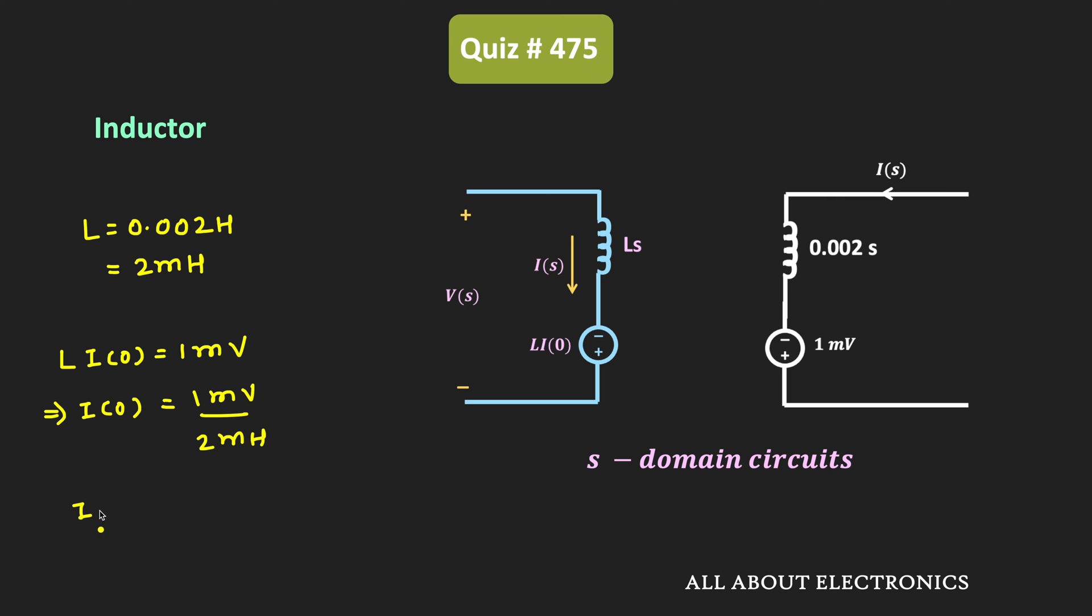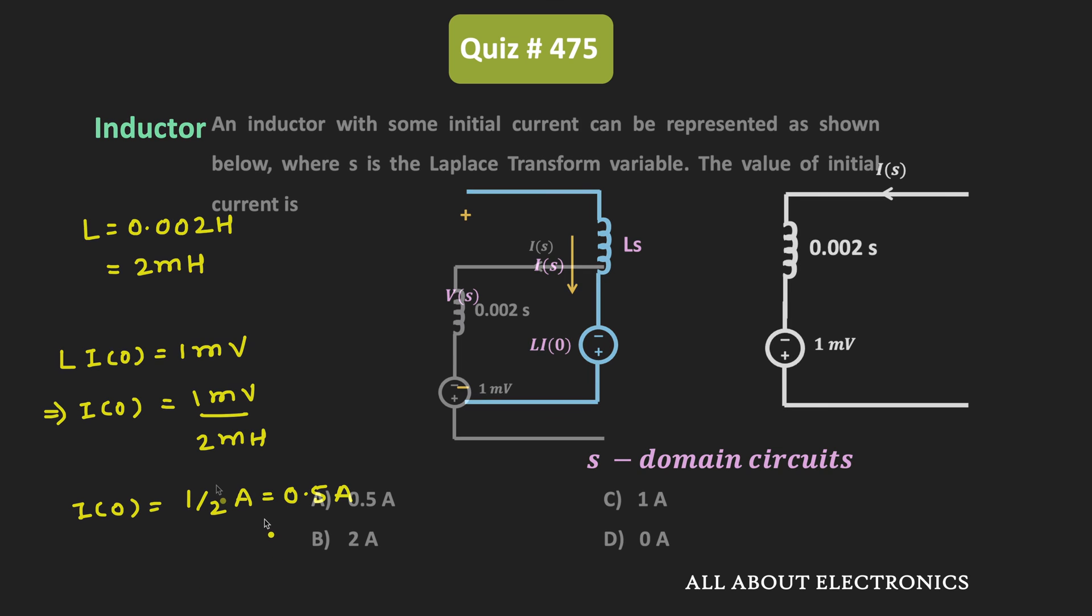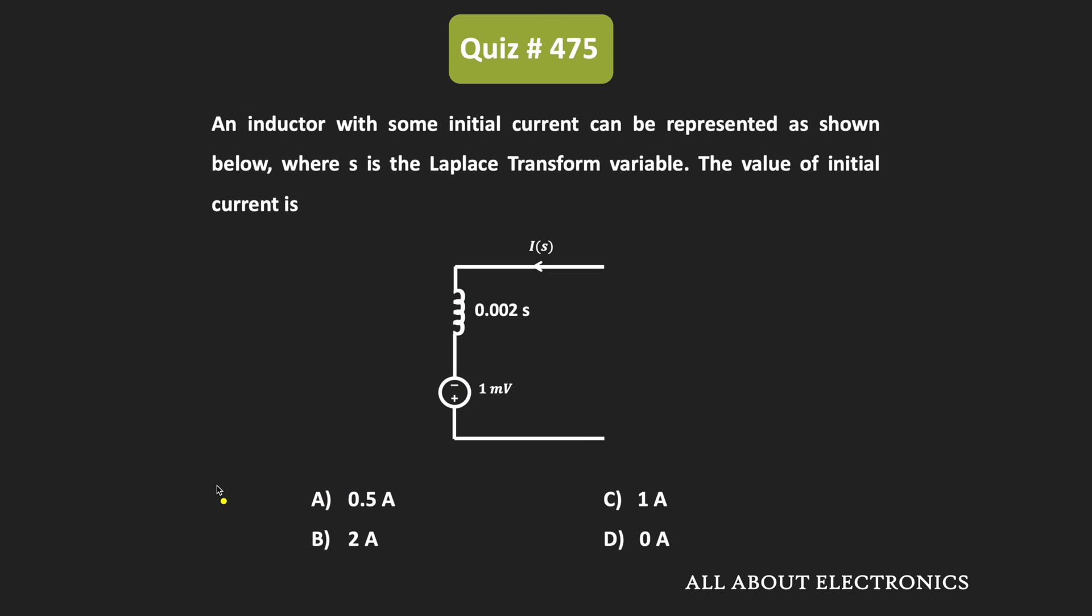So we can say that the initial current through the inductor, or this I0, is equal to 1 by 2 ampere, or that is equal to 0.5 ampere. So from this, we can say that for the given inductor circuit, the initial current through the inductor is equal to 0.5 ampere. And therefore, for the given question, this A is the correct answer.